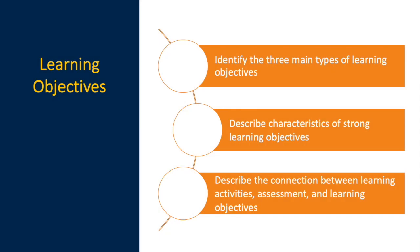The map designed for this video indicates that by the end of the video, you'll be able to identify three main types of learning objectives, identify the components of strong learning objectives, and describe the connection between assessment and learning objectives as well as learning activities. That lays out where you should be at the end of this video — those are the learning objectives. That's the beginning of our map.